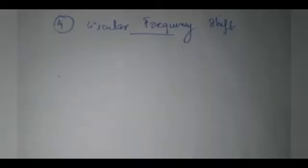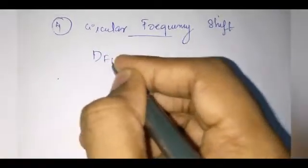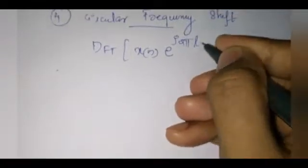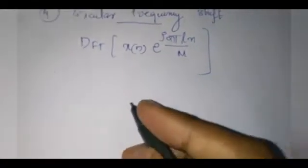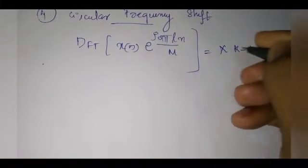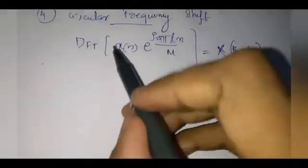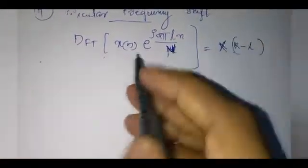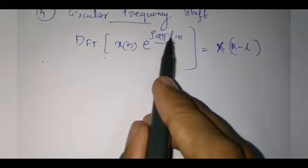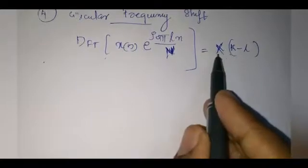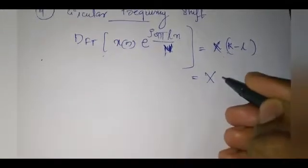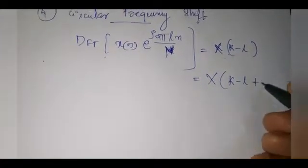The fourth property is circular frequency shift, which states that the DFT of x(n)·e^(j2πln/N) is X(k − l). Using the periodicity property, this can also be written as X(k − l + N).